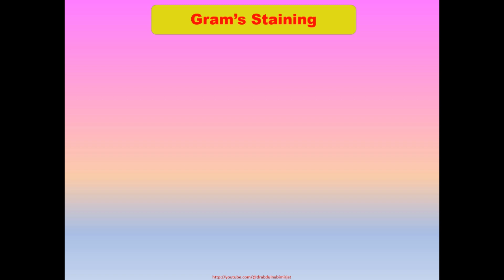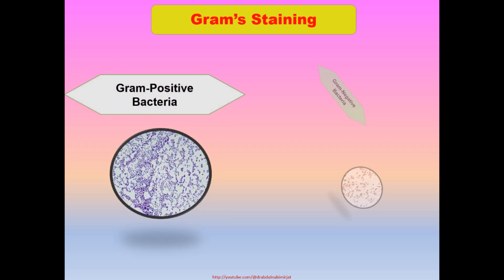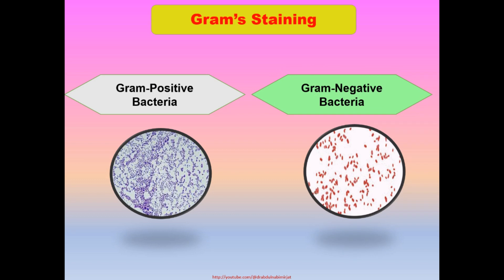Gram staining is a differential staining used to differentiate between two large groups of bacteria: Gram-positive bacteria and Gram-negative bacteria, based on coloring reactions. Gram-positive bacterial cell wall is highly thick and contains a high amount of peptidoglycan, whereas Gram-negative cell wall is thin and contains a high concentration of lipopolysaccharides.